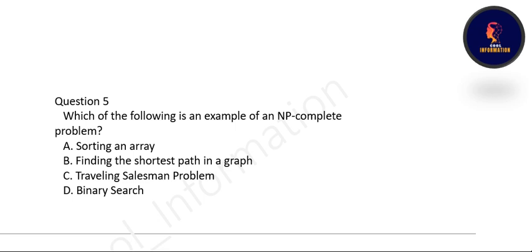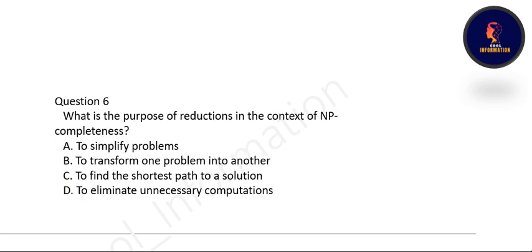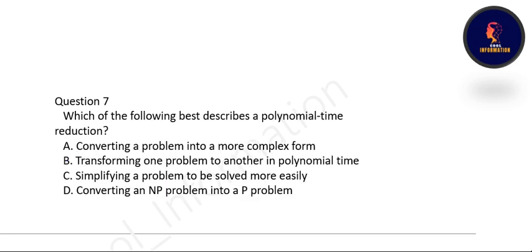Next question: which of the following is an example of an NP complete problem — sorting an array, finding the shortest path in a graph, traveling salesman problem, or binary tree? The correct option is C: traveling salesman problem (TSP). Next question: what is the purpose of reduction in the context of NP completeness? Reduction means to transform one problem into another. Next question: which best describes polynomial time reduction? Option B is correct: transforming one problem into another in polynomial time.